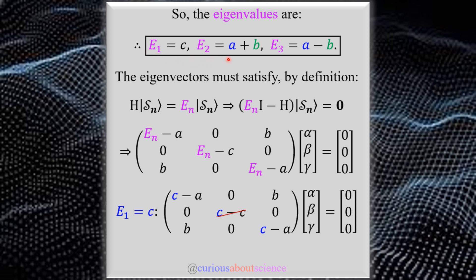In summary, our eigenvalues are E₁ = c, E₂ = a+b, and E₃ = a-b. The eigenvalues are the easy part; we don't have any multiplicities. We'll see soon that when we find the eigenvectors we encounter a case of degeneracy, which I'll highlight when we get there. Each eigenvalue is coupled with an eigenvector.